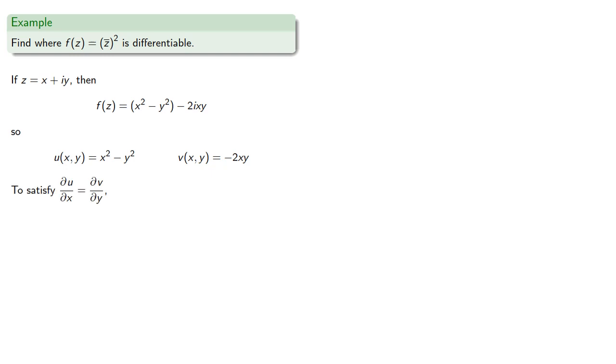To satisfy the first of the Cauchy-Riemann equations, the partial of u with respect to x must equal the partial of v with respect to y. Finding these partial derivatives and solving gives us x equal to 0.